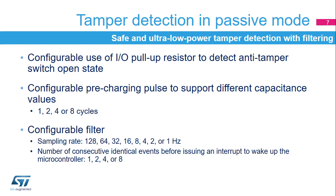The pin level is sampled at the end of the pre-charging pulse. A filter can be applied to the tamper pins; it consists of detecting a given number of consecutive identical events before issuing an interrupt to wake up the device. This number is configurable and can be 1, 2, 4, or 8 events at a programmable sampling rate from 1 to 128 Hz.